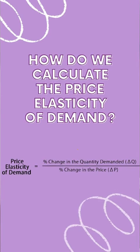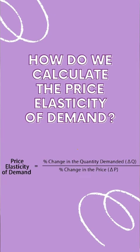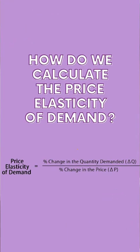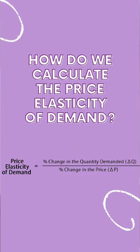So first things first, how do we calculate it? It is the percentage change in demand divided by the percentage change in price. You have to take the change in demand and divide by the original demand, multiplied by a hundred percent — and that's the percentage change in demand.